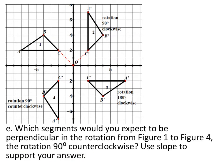Which segments would you expect to be perpendicular in the rotation from figure one to figure four — a 90-degree counterclockwise? Use slope to support your answer. Well, all the corresponding segments should be perpendicular. Let's just look at AB: that's up two and then to the right three — slope of two-thirds. From A prime to B prime, that's up three to the left two — slope of negative two-thirds. Wait, three over negative two. They are opposite reciprocals.